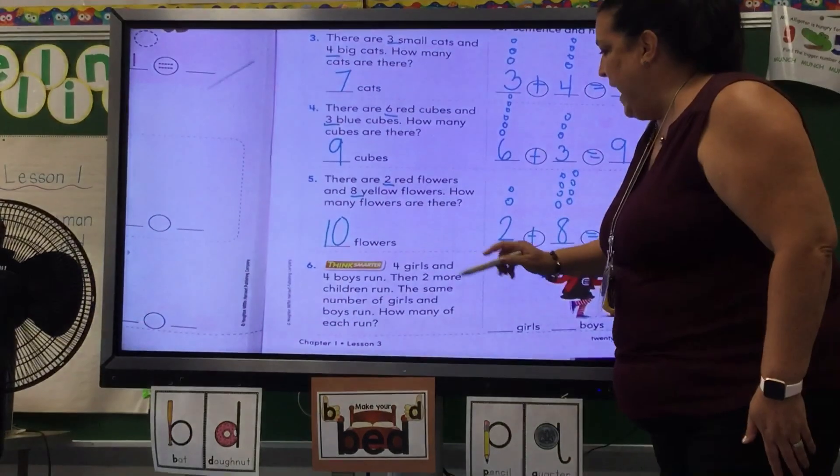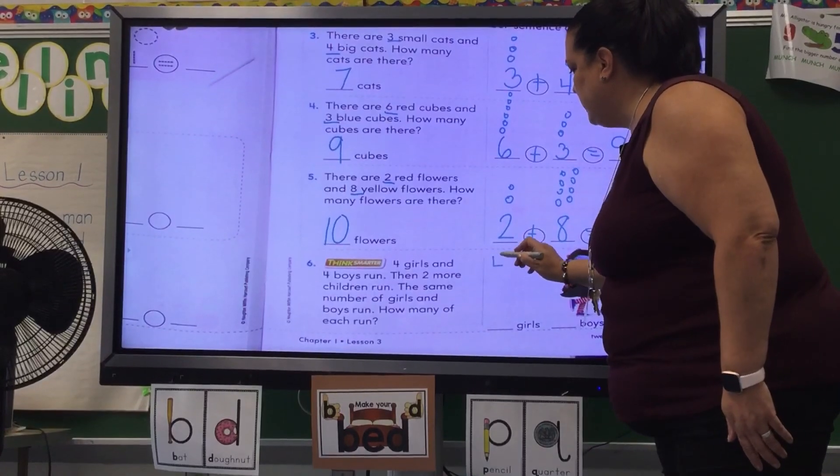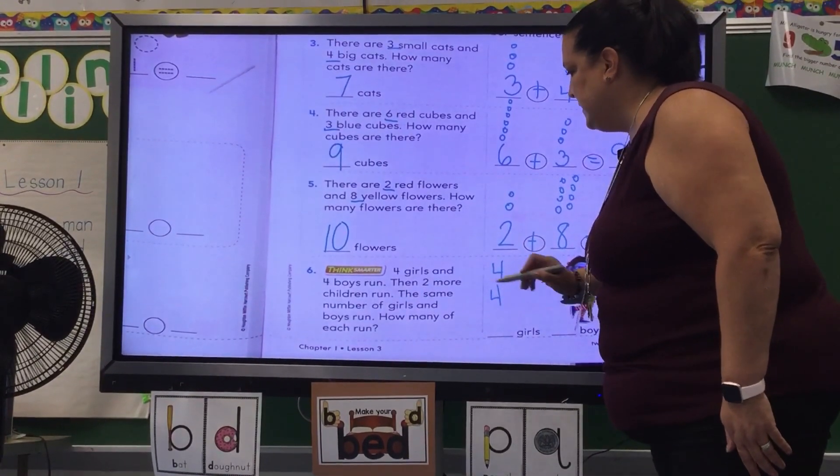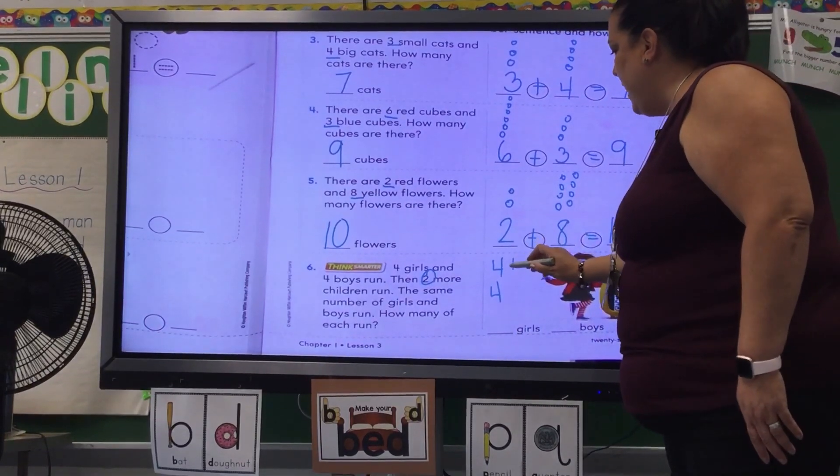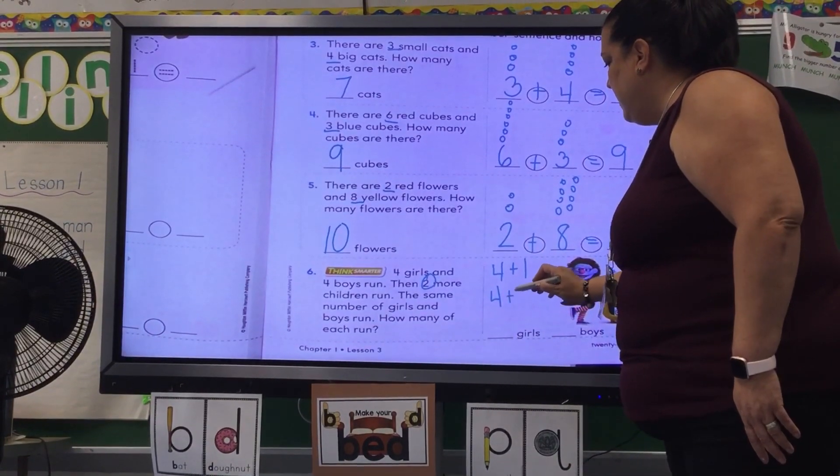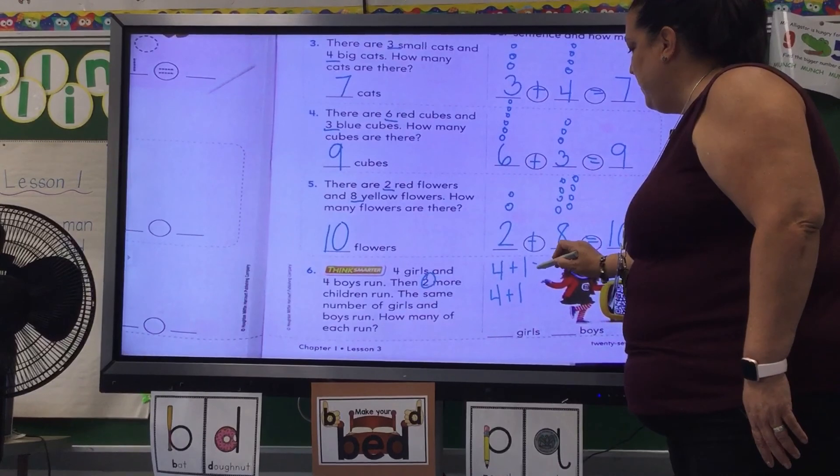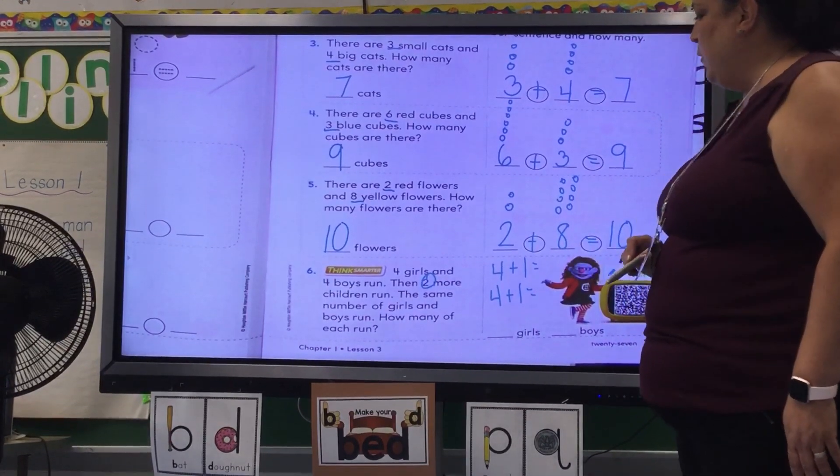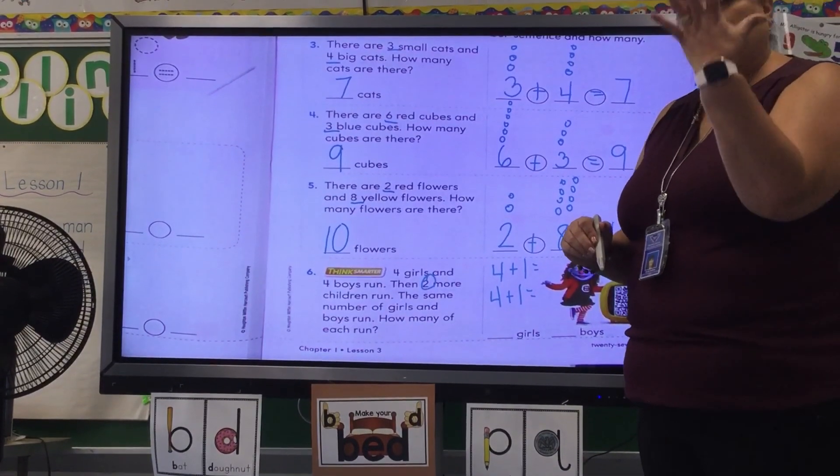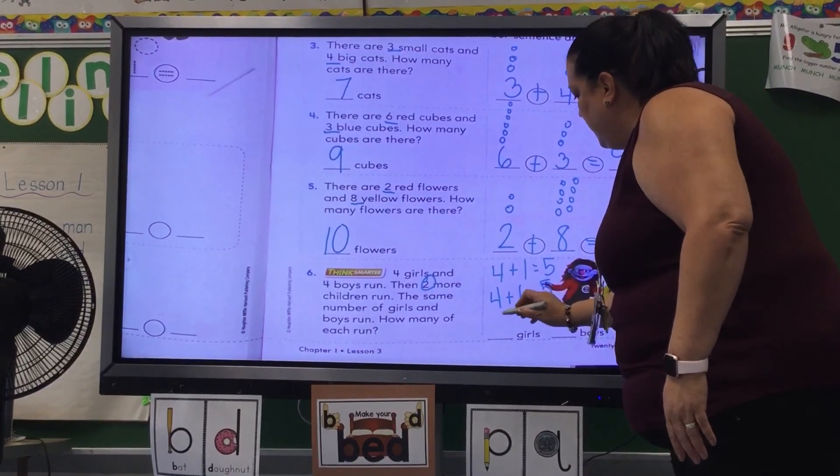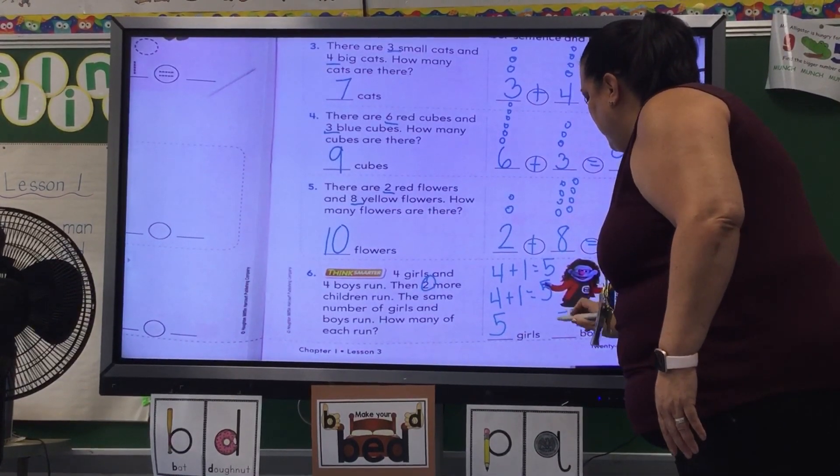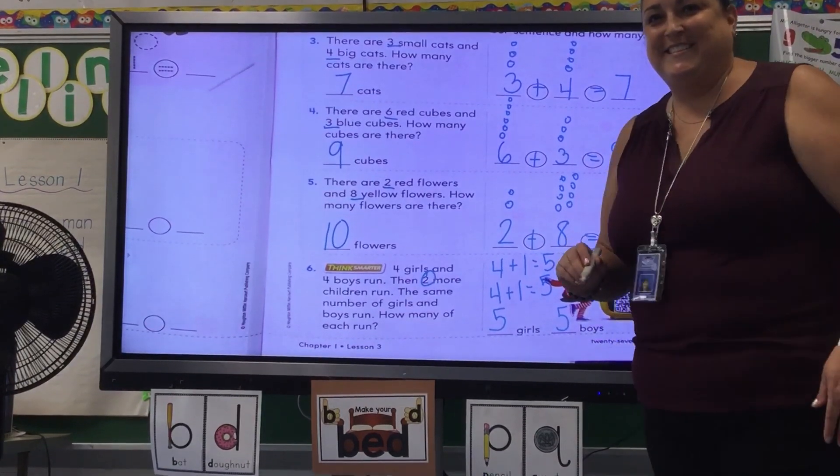Well, if we have four girls and four boys, and then we have two more that come, we're going to put one in each category. So four plus one and four plus one. What's four plus one? Four plus one more is five. So five girls and five boys. Did anyone get that one correct? Okay. Last page.